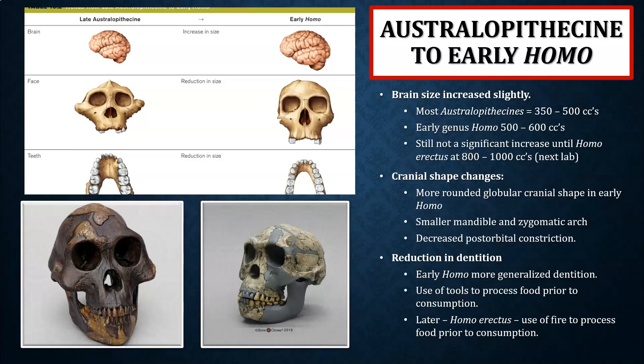When we see genus Homo — Homo habilis and onward — they're utilizing more stone tool technologies, processing their food prior to consumption, which reduces demand on the chewing muscles. With Homo erectus and onward, we have likely control of fire. Eating a cooked potato versus a raw one is much easier, so tool use and fire process food prior to consumption, reducing wear on the dentition and jaw. That's why we don't see features like a sagittal crest in genus Homo.